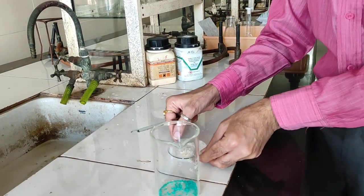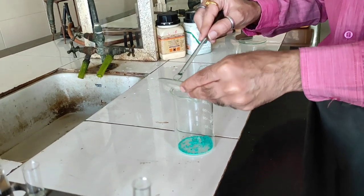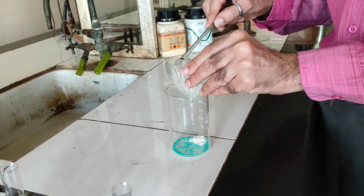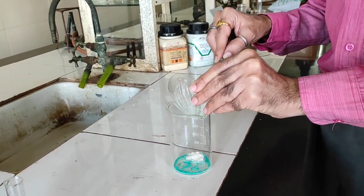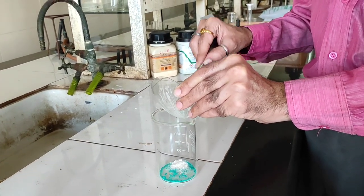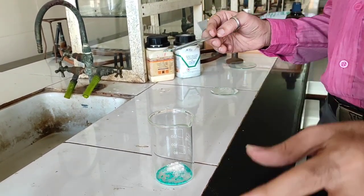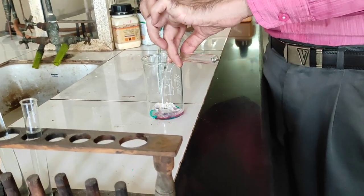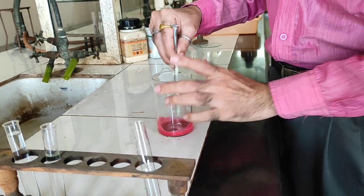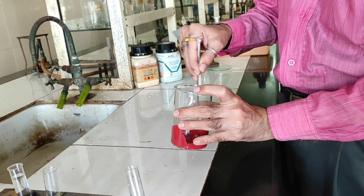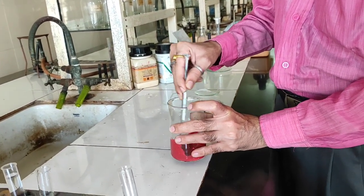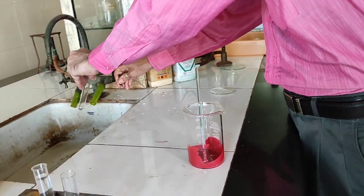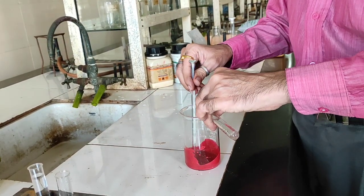Now into this we are going to add around 1 gram of the sodium salt of DMG. We are going to mix that and dissolve this in distilled water. You can see the coloration which is being obtained, the scarlet red precipitate that I was talking about.